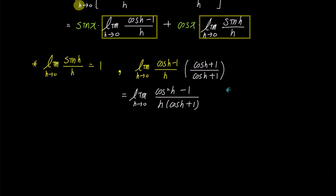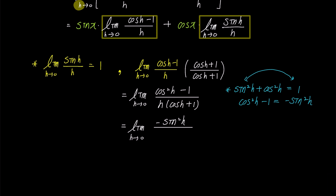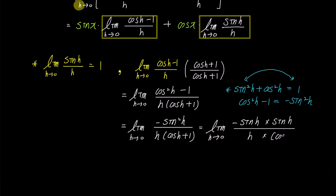By using the trigonometric identity sine squared h plus cosine squared h equals 1, if we rearrange the terms we get cosine squared h minus 1 equals negative sine squared h. Substituting this into the numerator, the limit becomes negative sine squared h over h times (cosine h plus 1) as h approaches 0. Now let's separate sine squared h into sine h times sine h, and express it as a product of two fractions: sine h over h, and sine h over (cosine h plus 1).